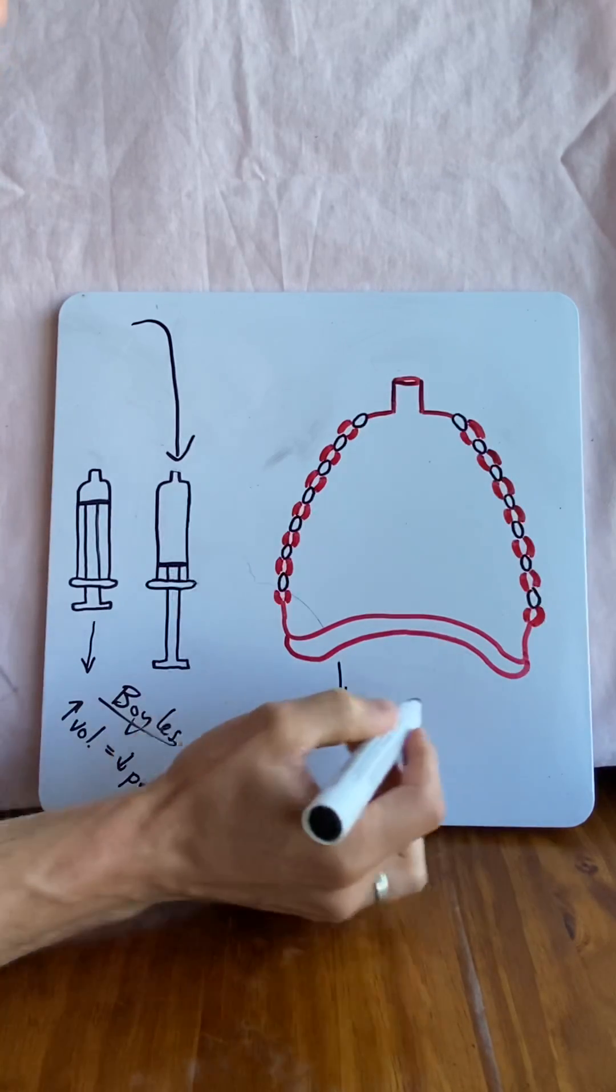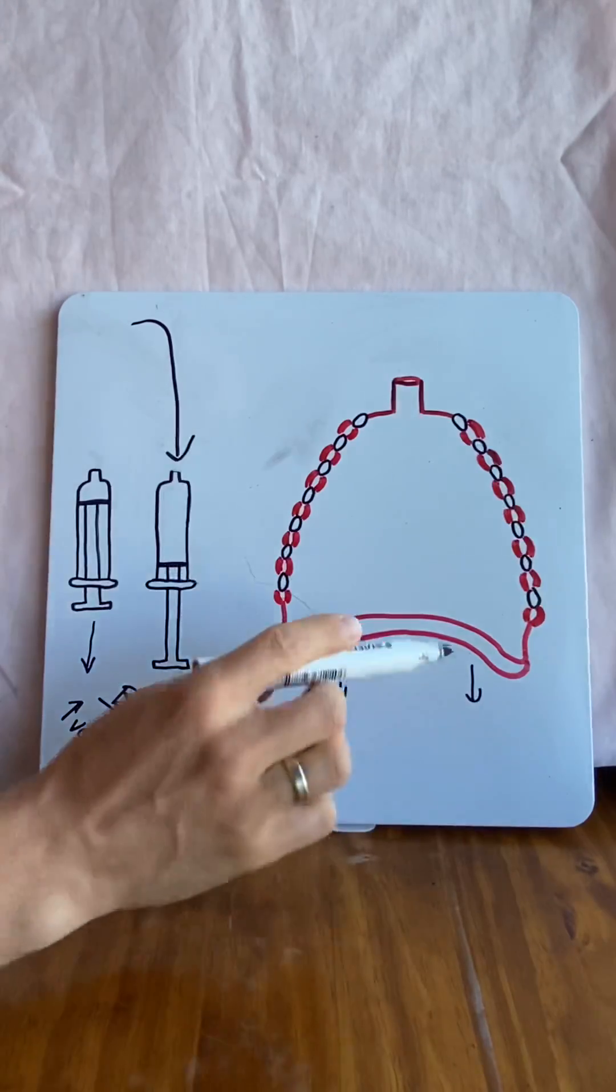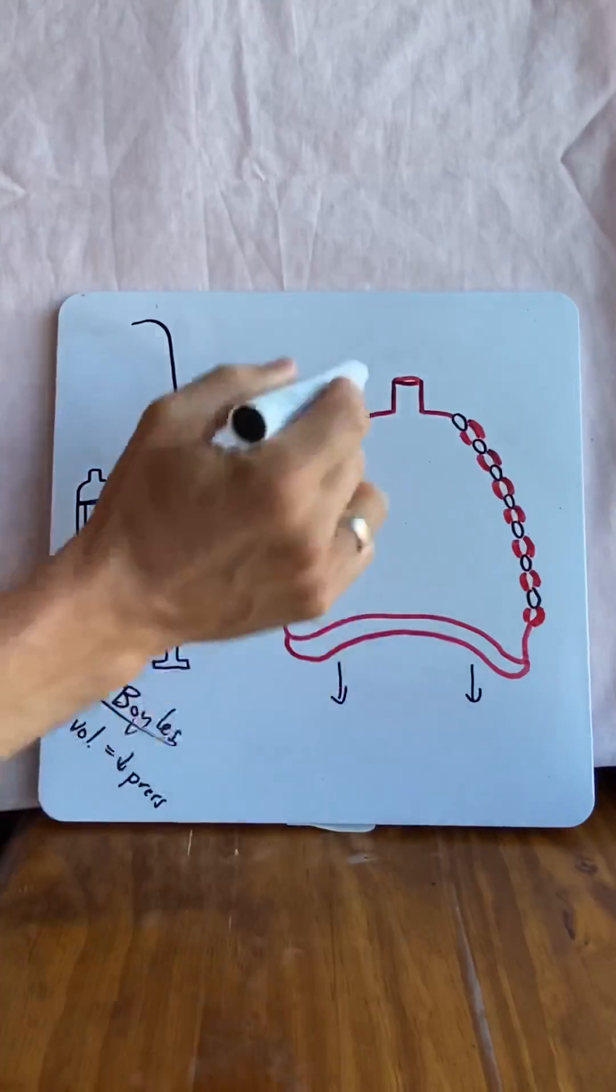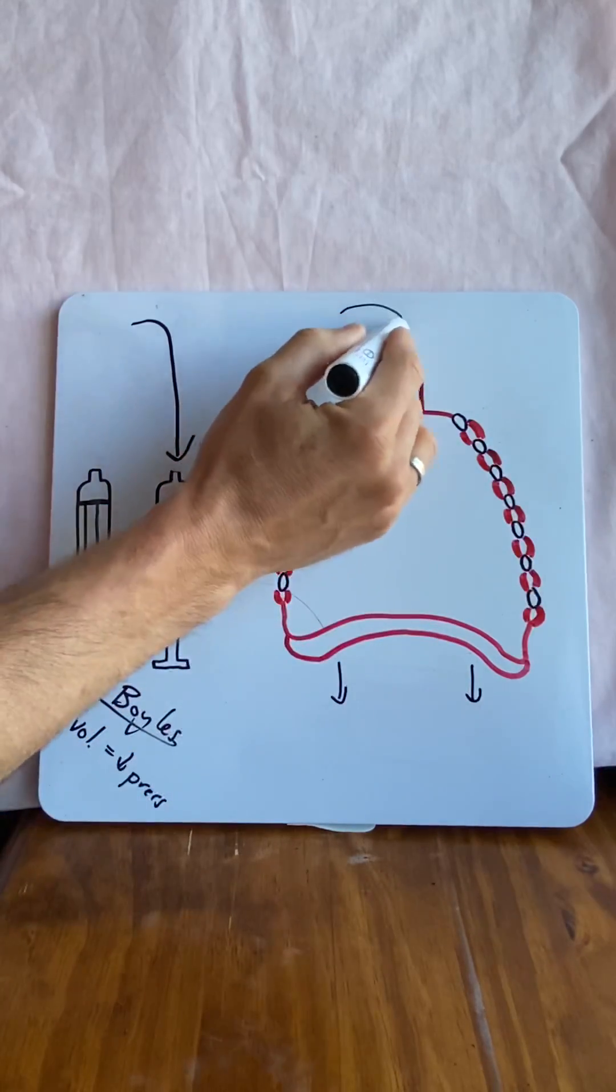We need to contract that diaphragm. If we contract it, we pull it down, we increase the volume of this thoracic cavity and the pressure decreases and air rushes in.